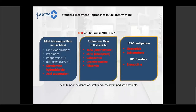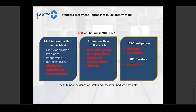Many of these medications don't have robust specific data supporting their use. For example, one very interesting study on amitriptyline in IBS showed that its efficacy for improving pain had the same result as placebo — both at 50% improvement. So while we have the physiology in mind as rationale, the evidence base is limited, which is why this remains a recommended but evidence-limited approach.